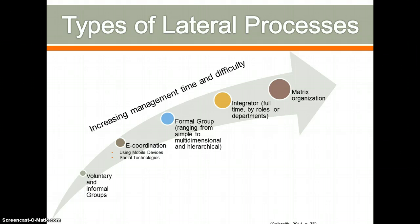The first level of lateral processes are voluntary and informal groups — these are the classroom teachers working together in their classrooms and across the dividers. Informal groups are spontaneous; the teachers need to feel empowered to collaborate on lesson plans, ideas for parent communication, special activities, and child behavior issues. I think the voluntary and informal groups are possibly working better than some of our other communication processes right now, but we still need to encourage that even more.